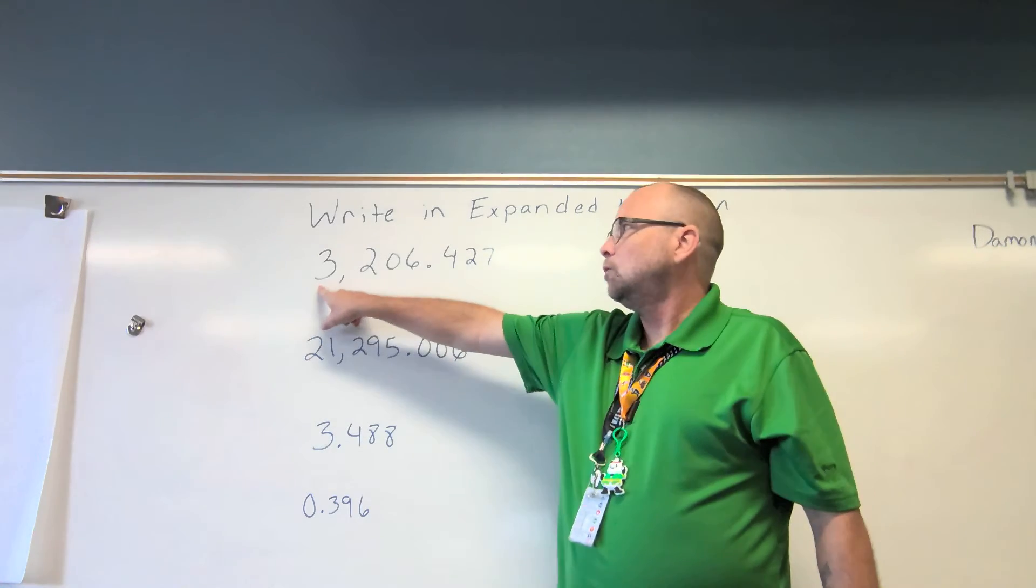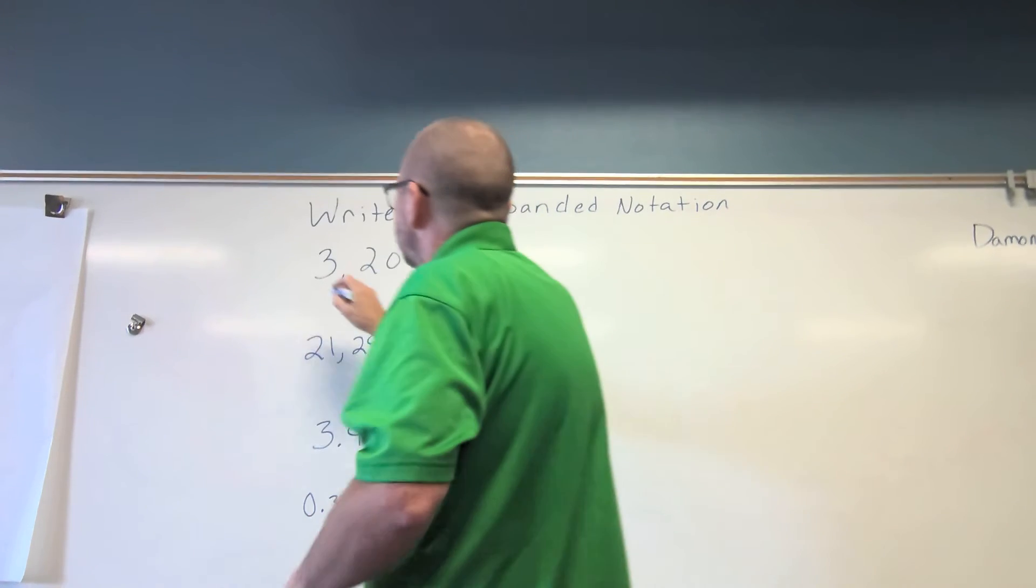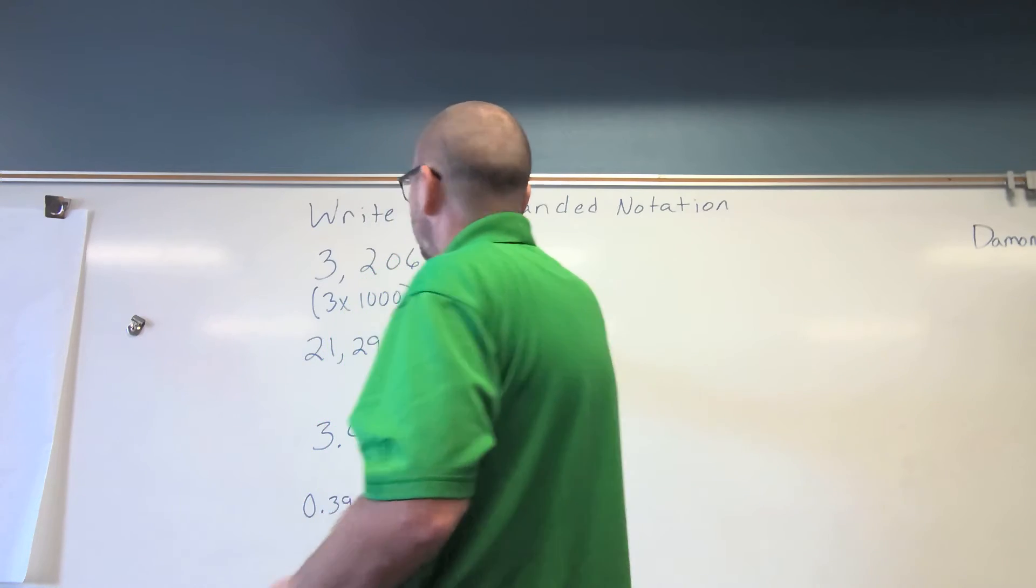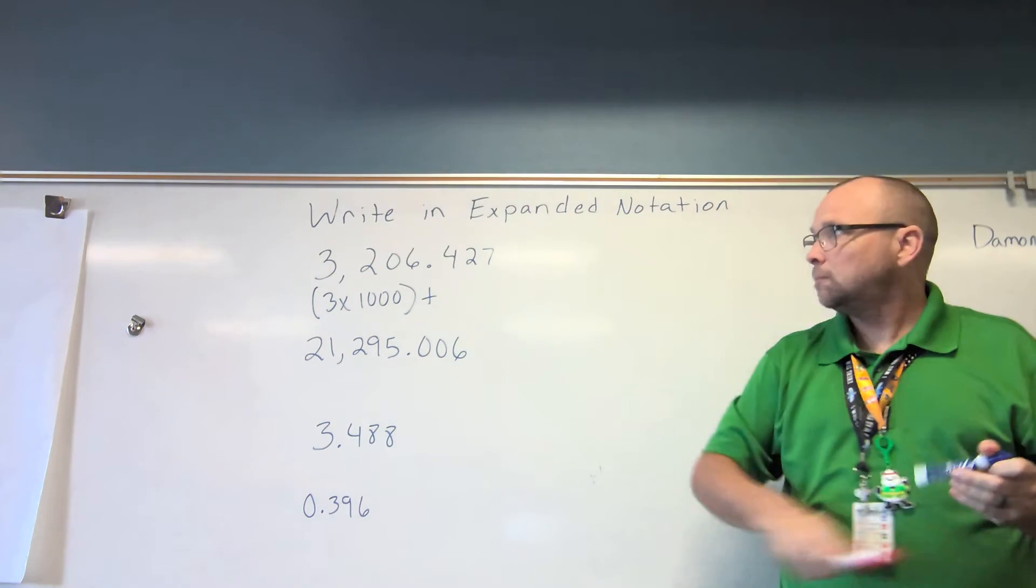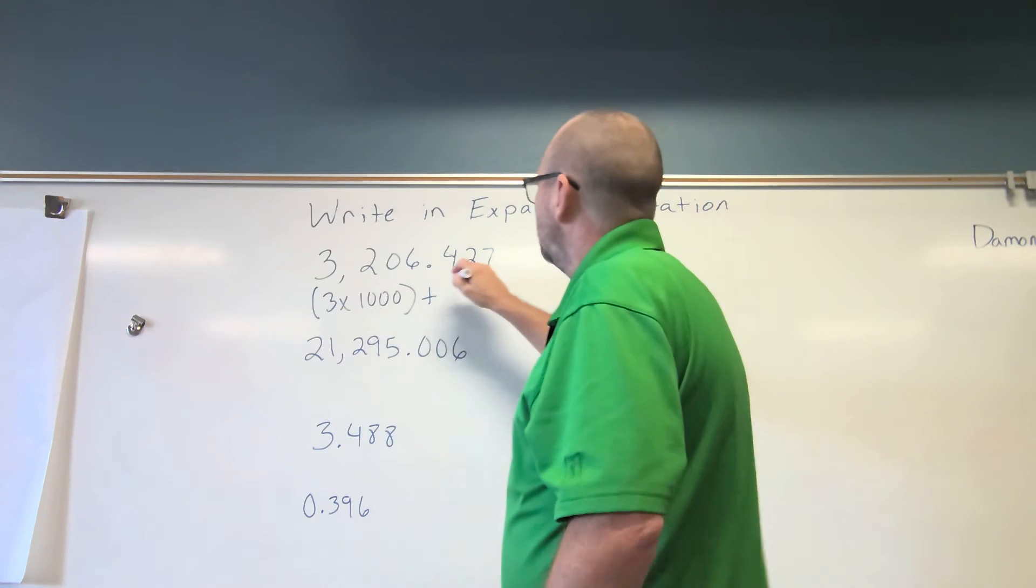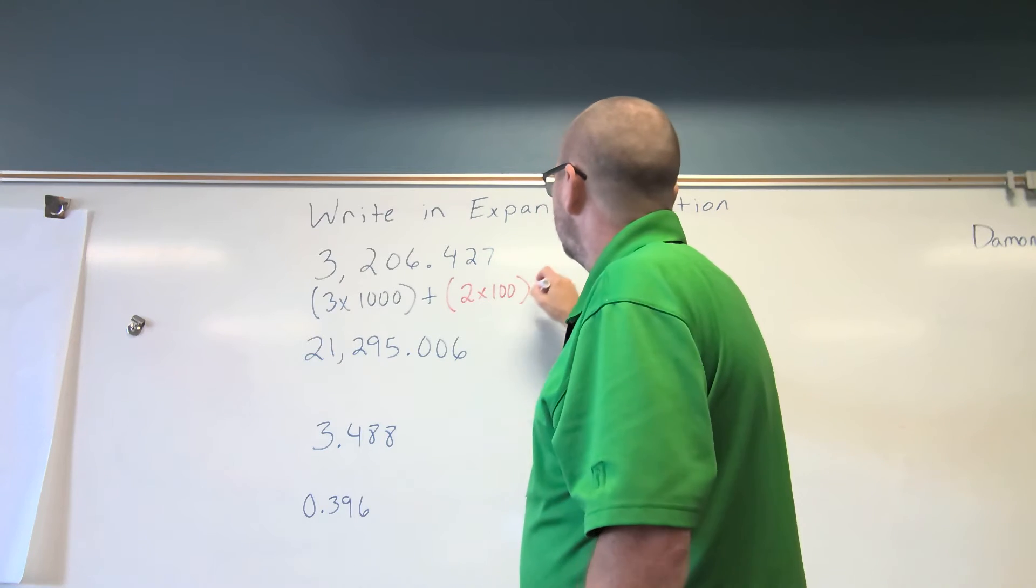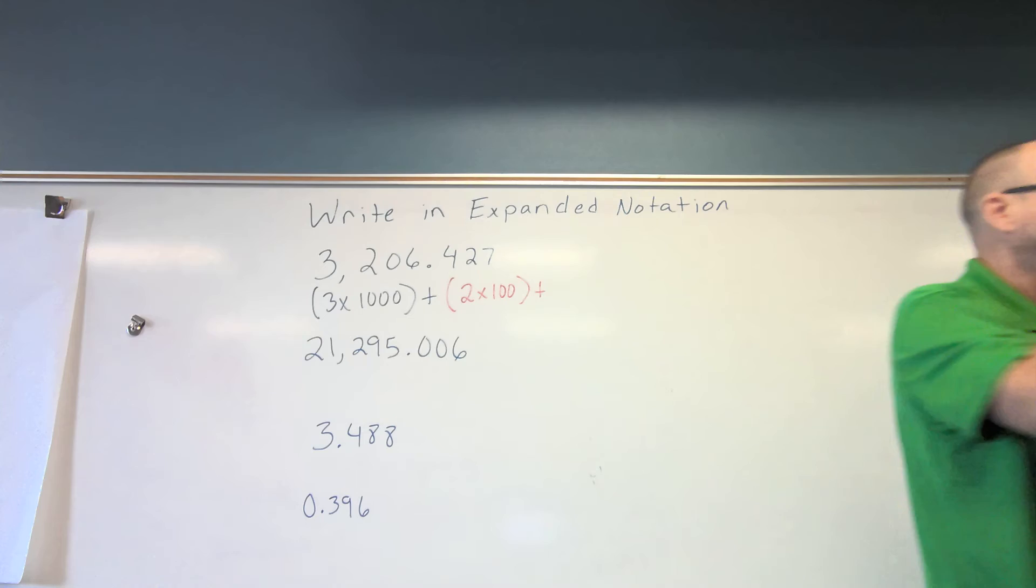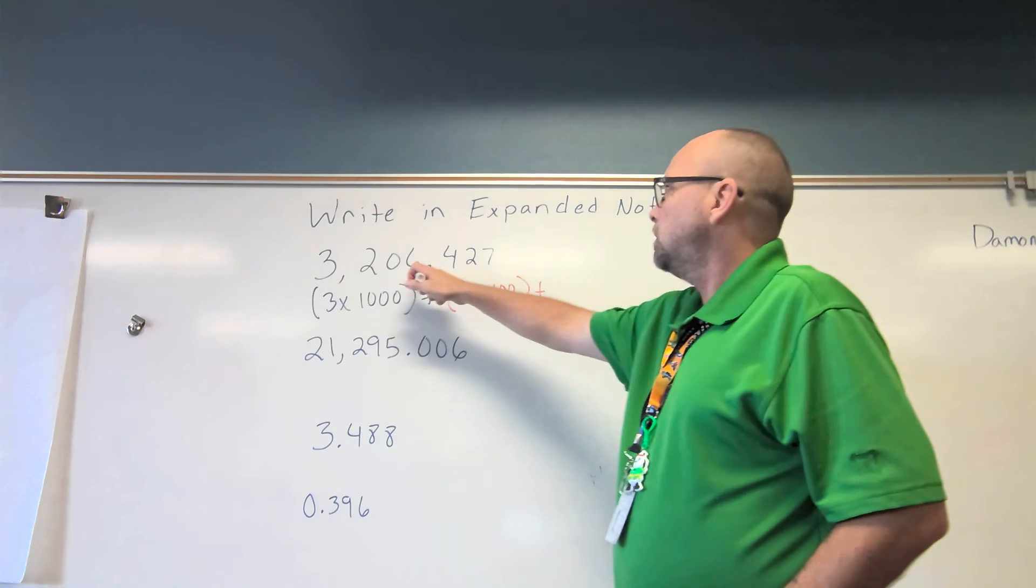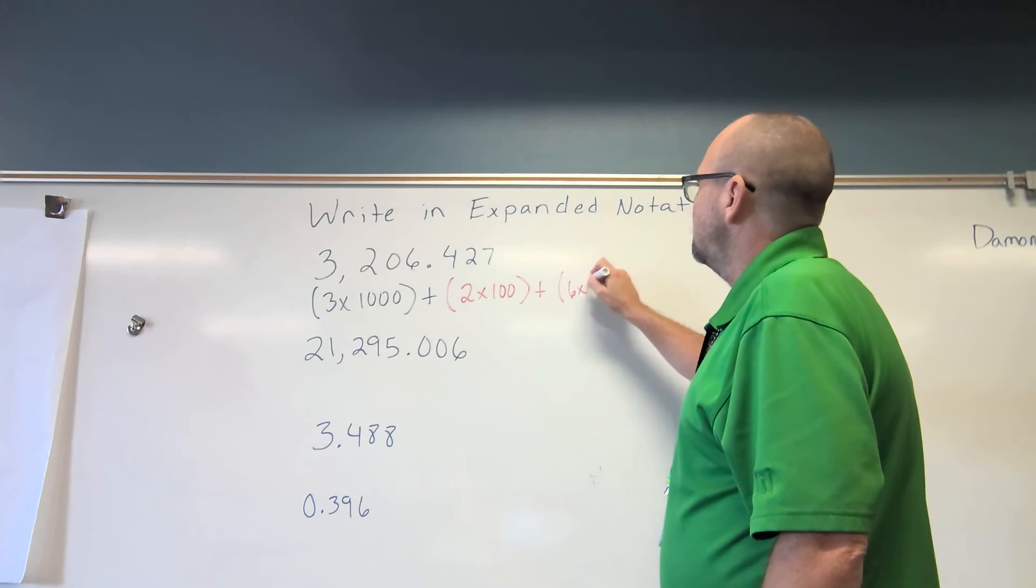Azzy, what place value is the three? Three thousands. So I'm going to multiply three times one thousand. Plus my next number, the two, what place value is that in? Hundreds. Plus two times one hundred. Plus, I don't have to do any zeros, just skip the zeros. What place value is the six in, Azzy? One. Good. So six times one.